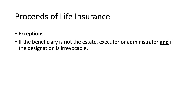For example: the decedent took out life insurance on his life and the beneficiary is his child, and the designation is irrevocable — meaning it cannot be changed or revoked by the decedent. That means during his lifetime he can no longer change the beneficiary, so he has no control over it. When he dies and the proceeds of the life insurance are granted to the child, those proceeds will not be included in the gross estate of the decedent.